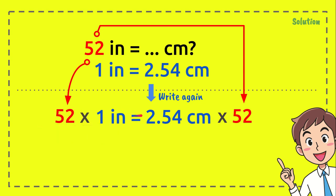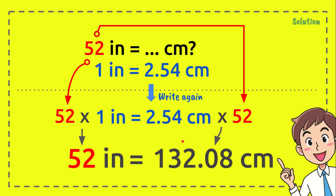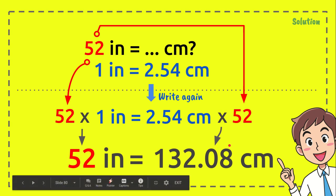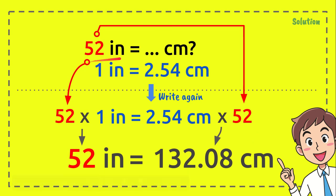Ok? It make it equals. We have 52 in both sides. Ok? Now 52 times 1 inch equals 52 and 2.54 centimeters times 52 equals 132.08 centimeters. And that's the answer of this question.